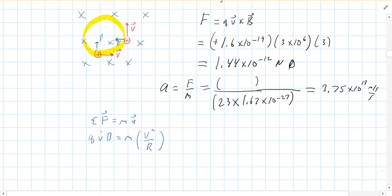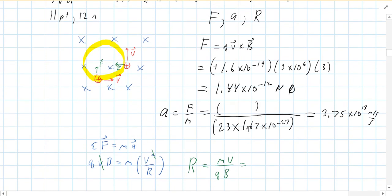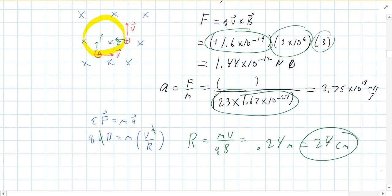Now, one of the Vs drops out here. And if you rearrange this for R, you're going to get MV, which is not an accident. That's the momentum of the particle, divided by QB. And we have all those values. The mass was this right there. The velocity was that right there. The charge was right there. And the magnetic field is 3. So if you plug all those in, I get 0.24 meters, which is 24 centimeters. So he will make a 24 centimeter radius circle. All right. So there's one example.